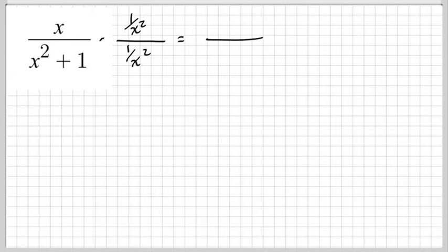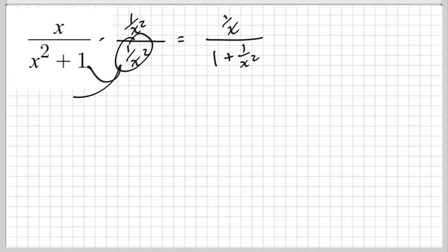Now when we do that, what we get is on the top we get 1 over x, on the bottom we get 1, and then we get 1 over x squared. We multiply this guy times that and that, and we multiply this guy times that. This is what we get.